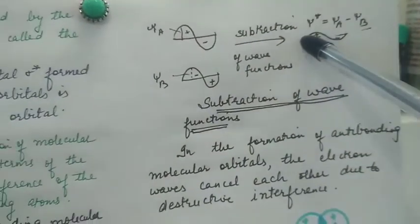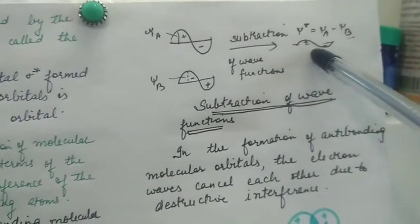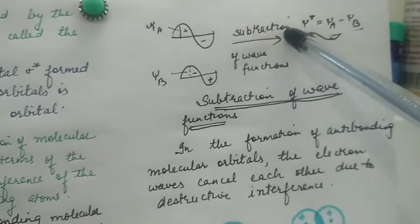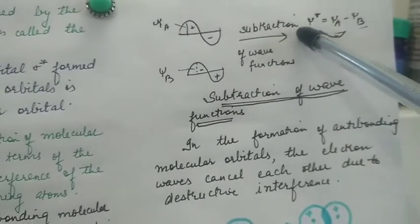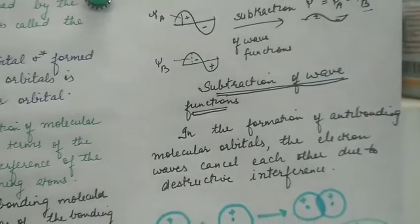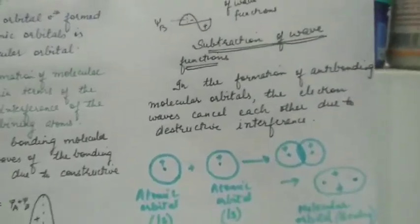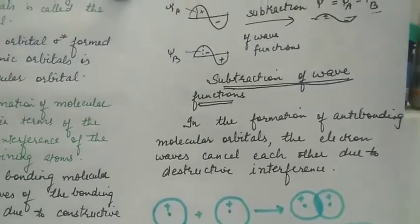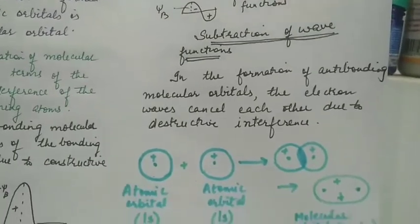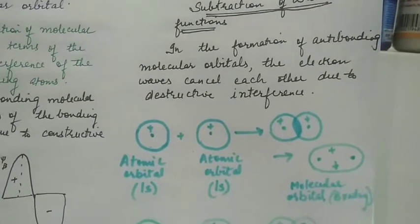It has lesser amplitude and is represented as ψA minus ψB. This is subtraction of wave functions, and this molecular orbital is anti-bonding. In the formation of anti-bonding molecular orbital, the electron waves cancel each other due to destructive interference.